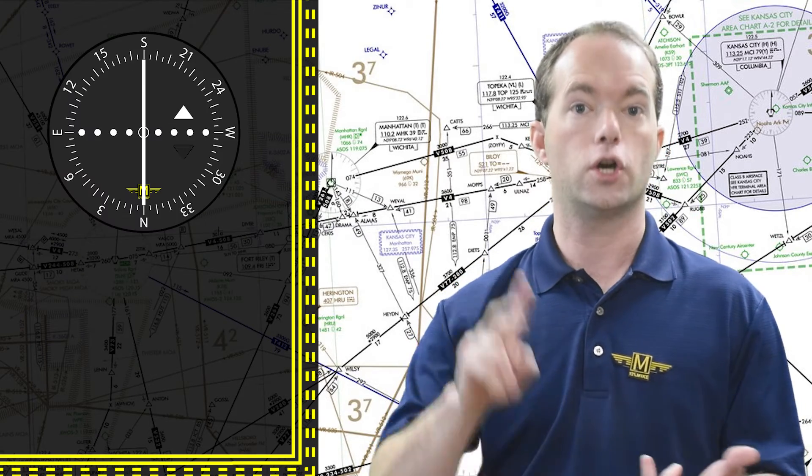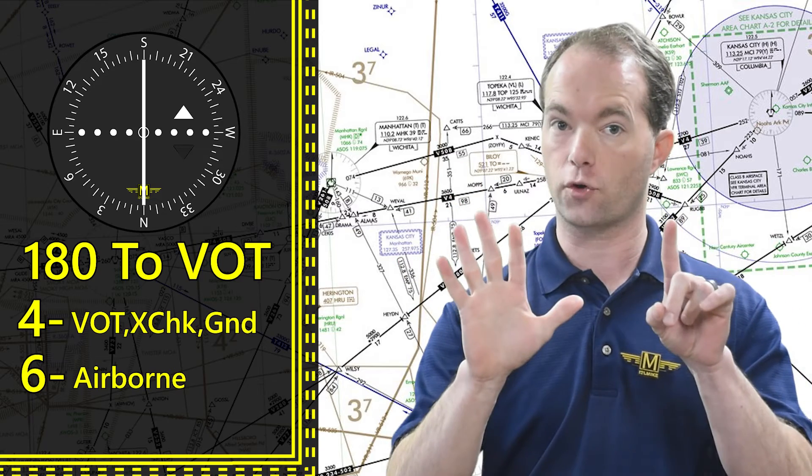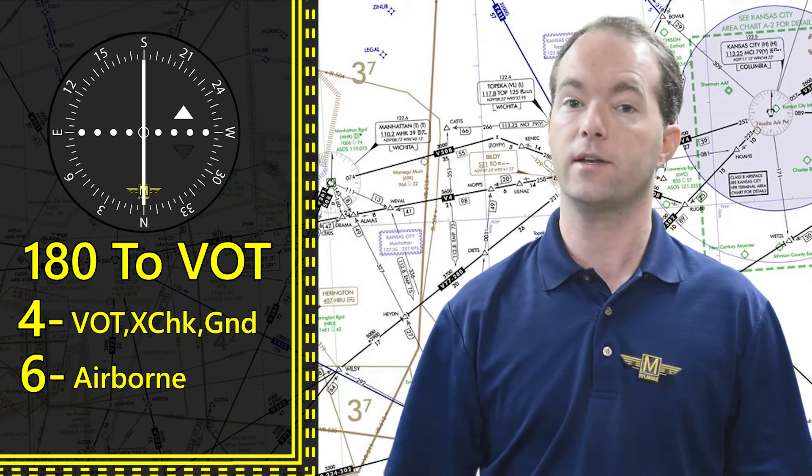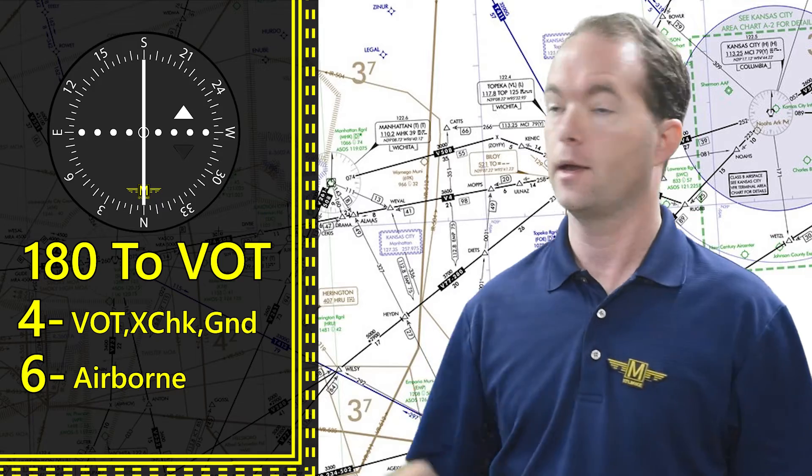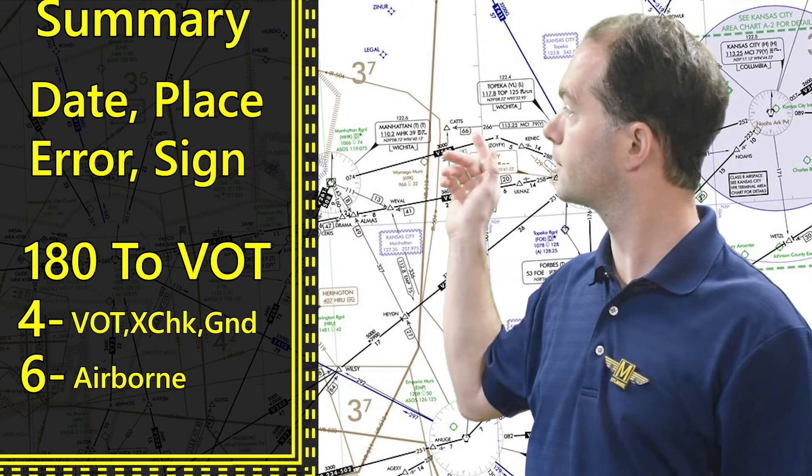So that's how you know that your VOR signal is good. Check the logs, do the checks, plus or minus four or six degrees. Cessna doesn't make a 180 from. Date, place, error, and sign. And that's it.